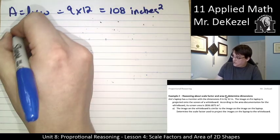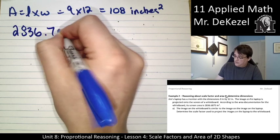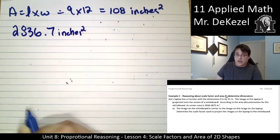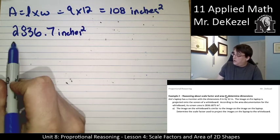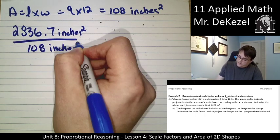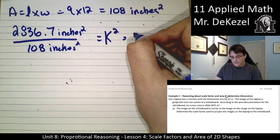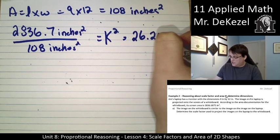So the area it gives us is 2,836. I'm going to round that to 0.7 inches squared. Forgive me, please. And then I'm going to divide that by the area of the laptop, 108 inches squared for the area of the laptop, to get a k squared value of 26.265.